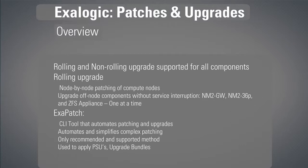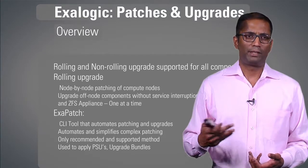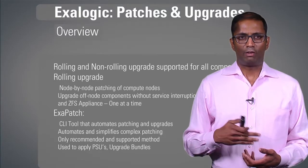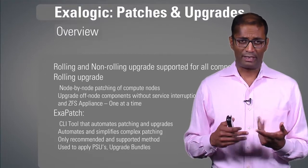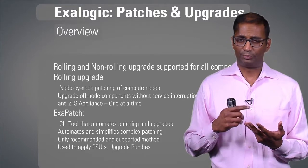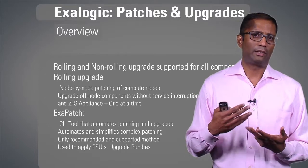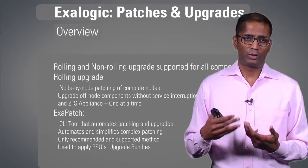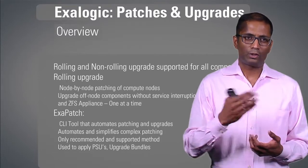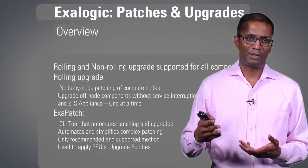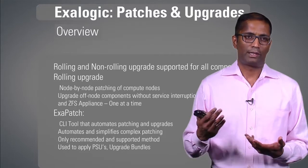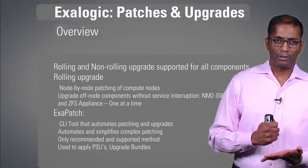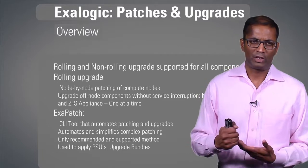A rolling upgrade — or rolling patch — means we do one node at a time. For compute nodes, it's node by node. For off-node components — the NM2 gateway switches, the ZFS, and the spine switch, the NM2-36P switch — you can also patch one component at a time using rolling upgrades.